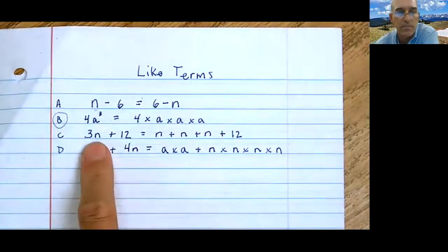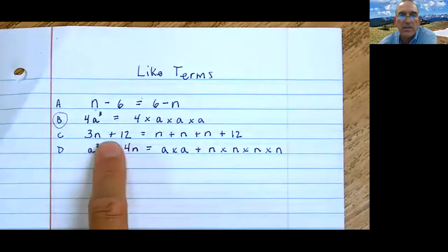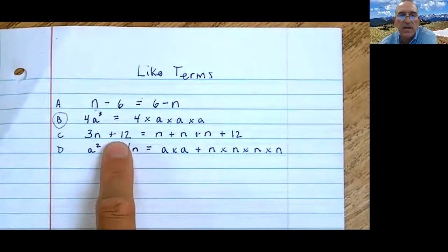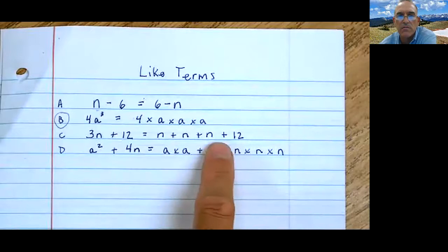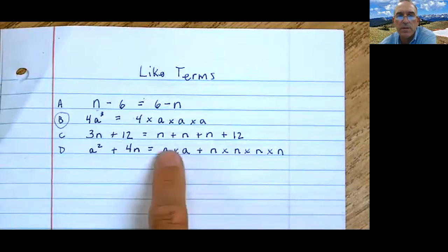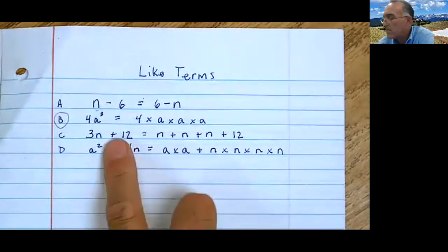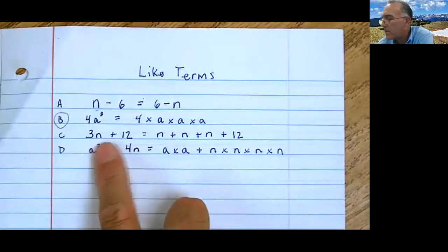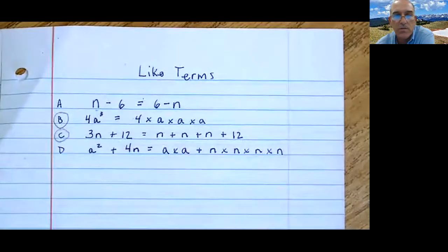Let's look at another one. 3n plus 12 - is that equal to this? There's three n's in a row plus 12. It looks to be correct, doesn't it? I think it's the same. 3n, there's the three n's plus 12. So that one is true.